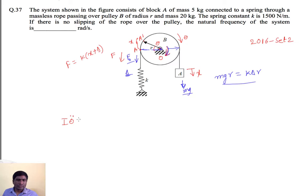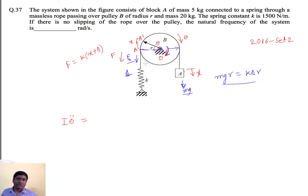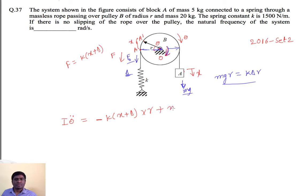Applying moment about point O: I·θ̈ equals the sum of moments. Clockwise direction is positive, anticlockwise is negative. The MZ force acts clockwise, while the spring force acts anticlockwise. Spring force moment is F times perpendicular distance R, where F equals K·(X + delta). The clockwise term is MZ·R, but MZ·R equals K·delta·R, so that term cancels out.